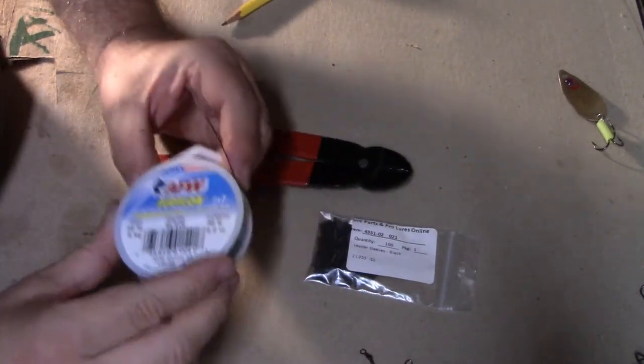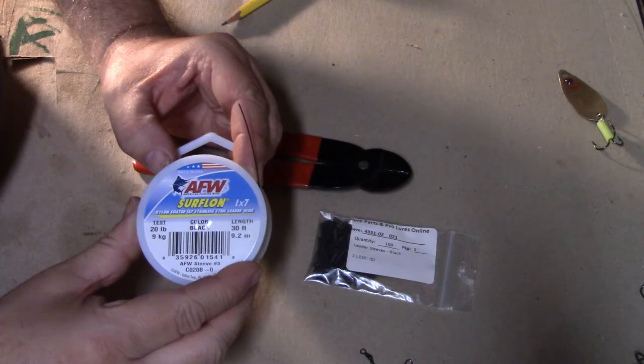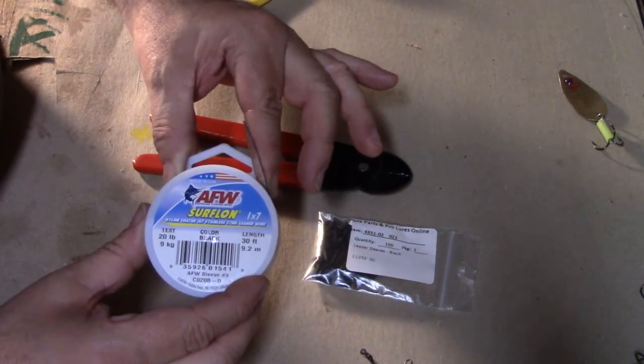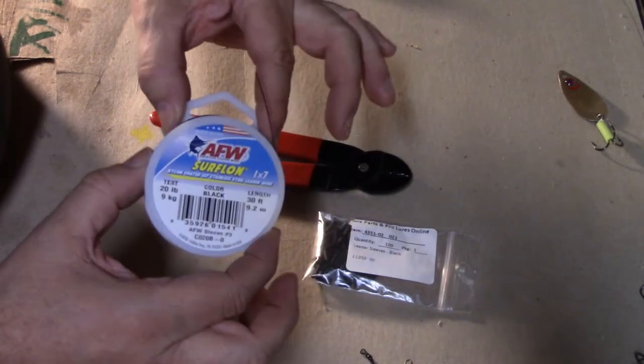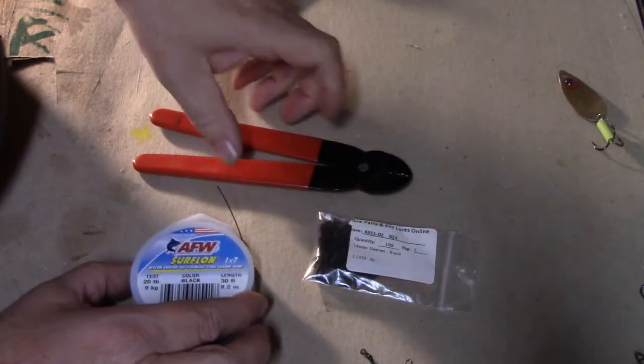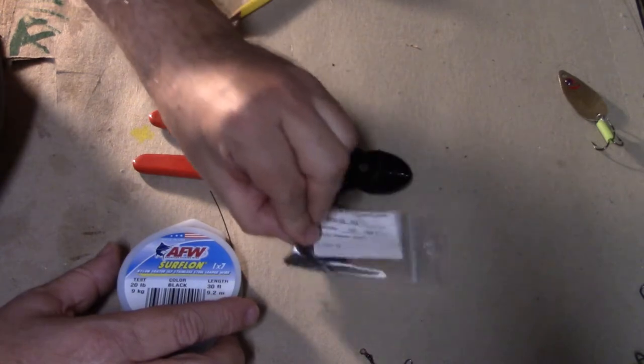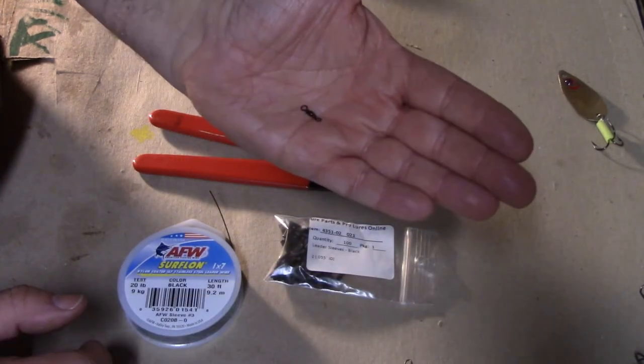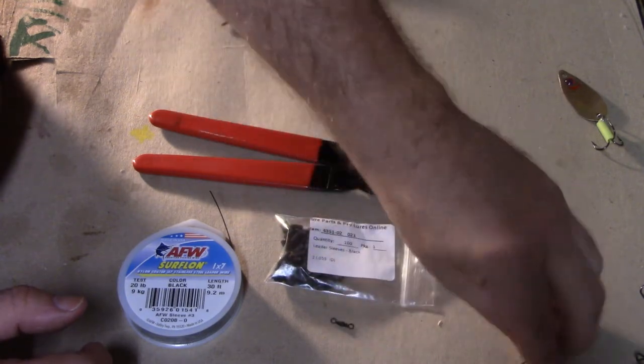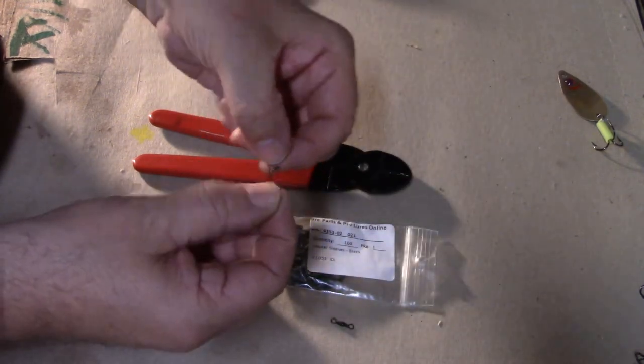Okay, so today we're going to make some leaders. This is very easy to do, very inexpensive. You don't need much stuff—need a little bit of wire, some sleeves, a barrel swivel, a snap.